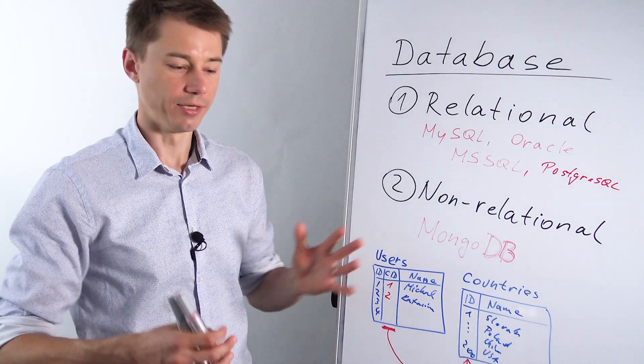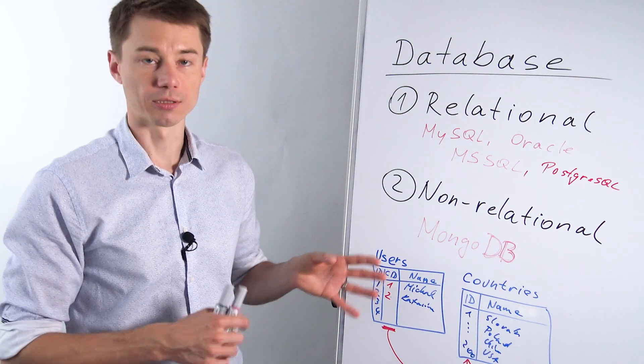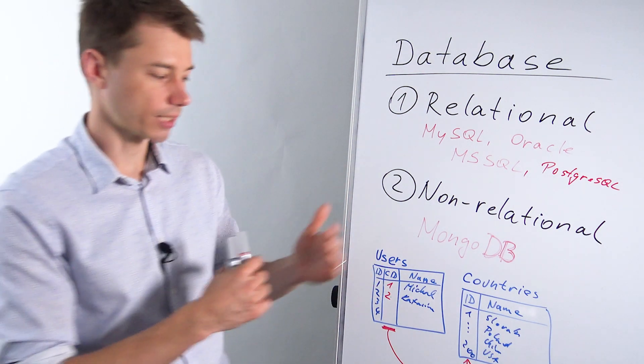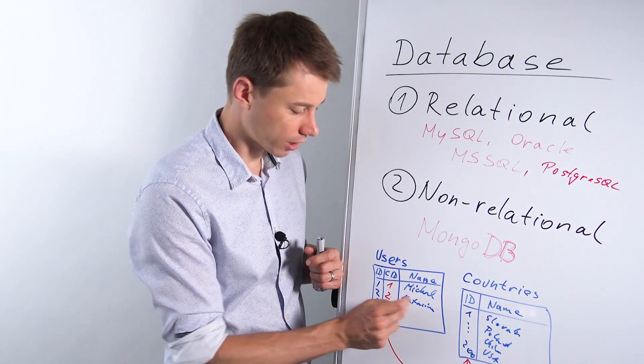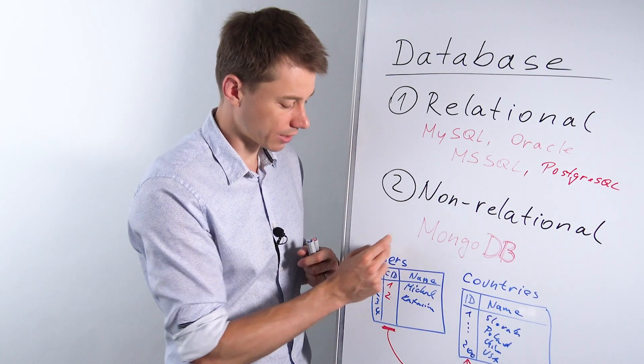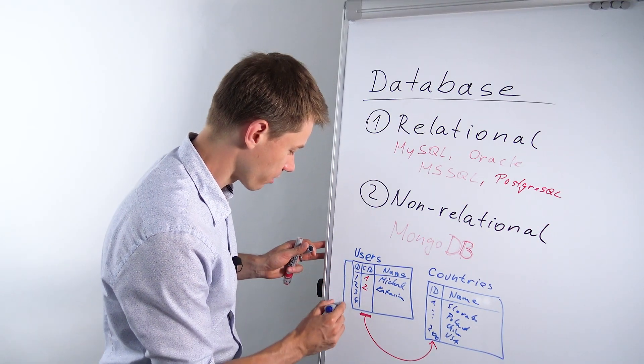I've worked with databases of say 400, 500 tables. All these tables are connected to each other. So here I show you a very simple example of two tables only. But there could be 10 other tables. There could be many more columns here in the user table.